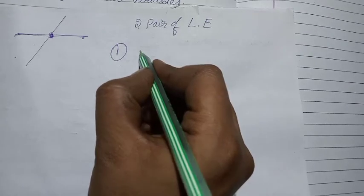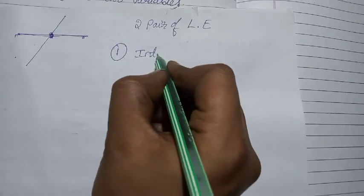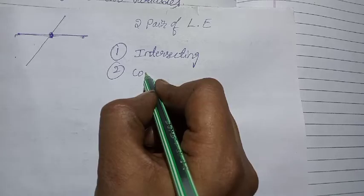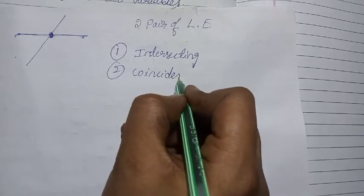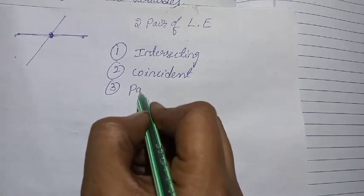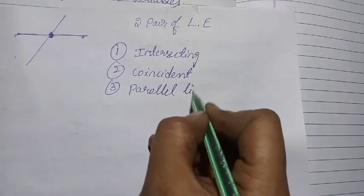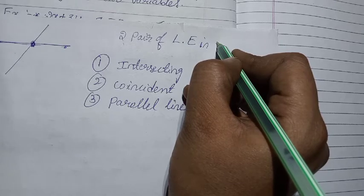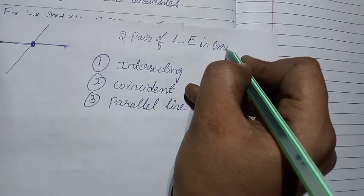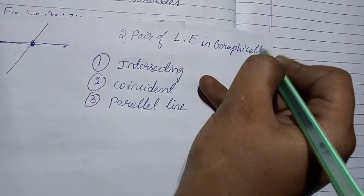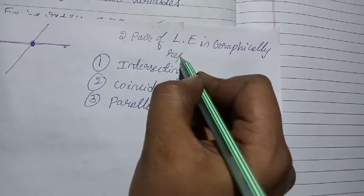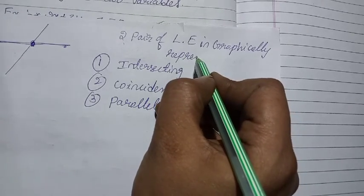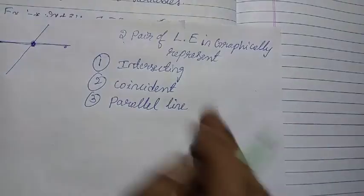One is intersecting lines — intersecting at a point. Another is coincident lines. And one more is parallel lines. So where you get pair of linear equations, in graphical representation or geometrically, if you represent graphically, three conditions you will get.